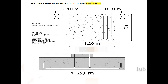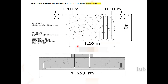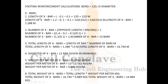Let us now calculate reinforcement for a footing. This is a 1.2m × 1.4m footing. The X-direction bar is 12mm diameter at 100mm center to center. Cover provided is 100mm, spacing is 100mm, and the bend is a standard hook. We are going to calculate based on what is shown in the image.